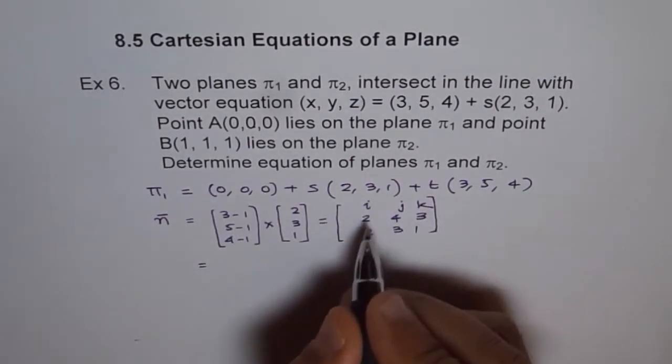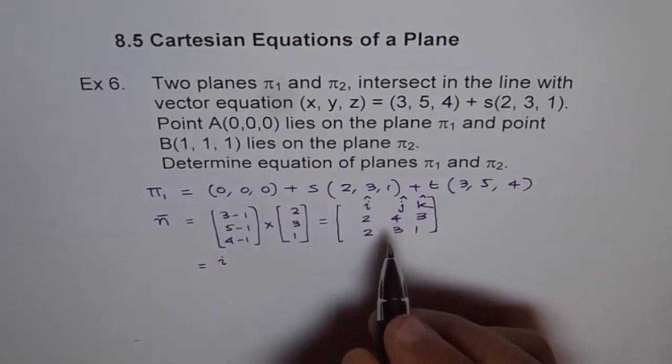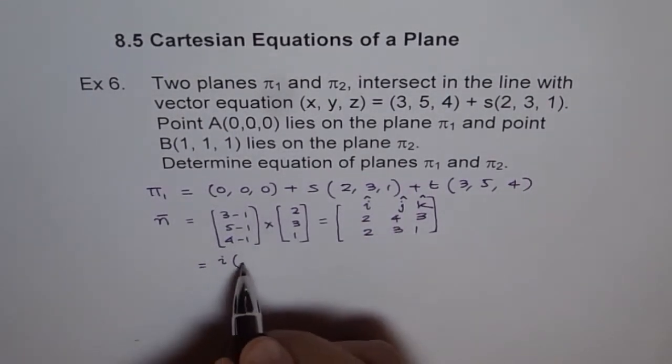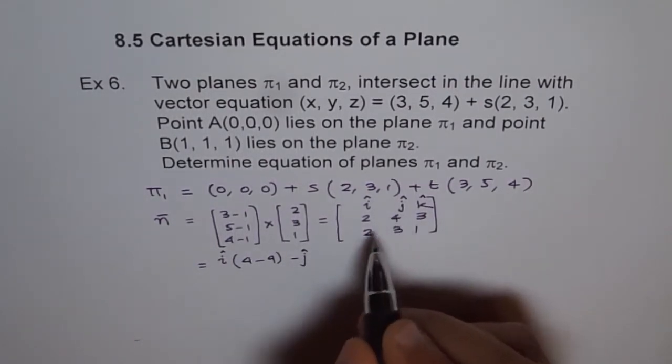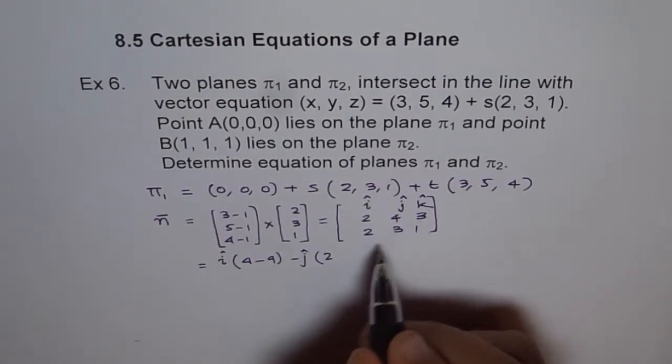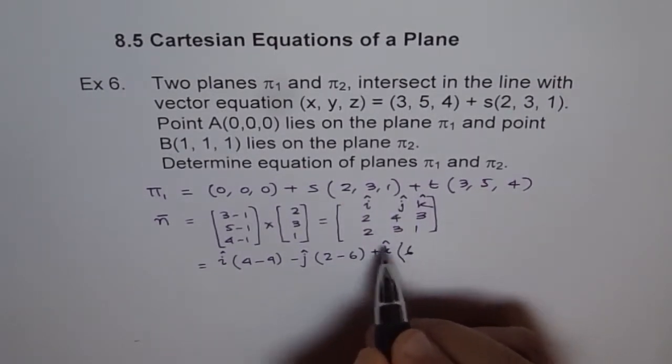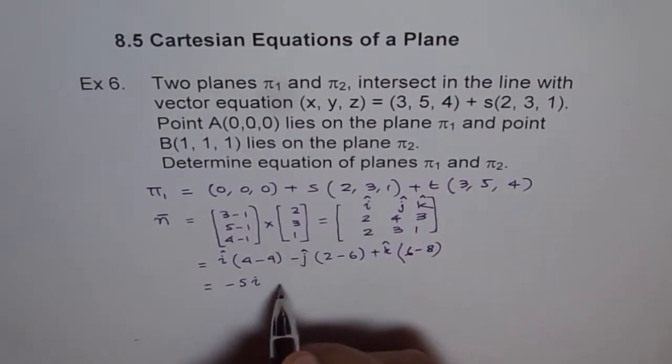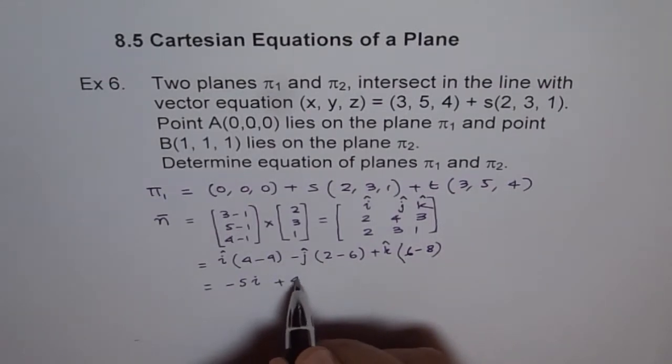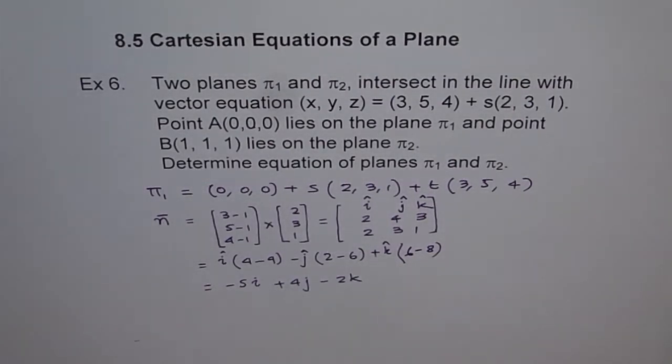If we do this normal vector, we can get this as i, j, k. This is like 3-1 is 2, 5-1 is 4, and 4-1 is 3, crossed with (2,3,1). From here, we can say i times (4 minus 9), minus j times (2 minus 6), plus k times (6 minus 8).